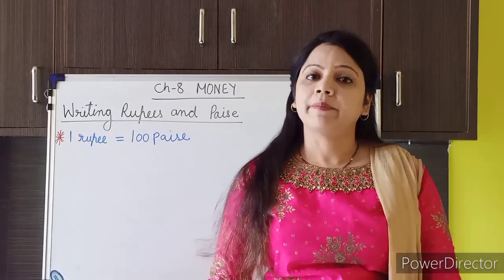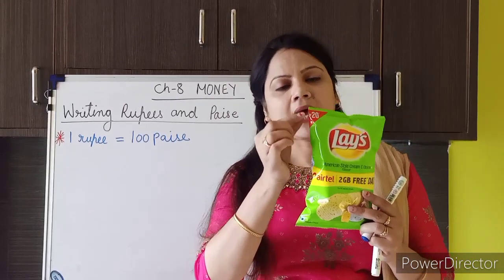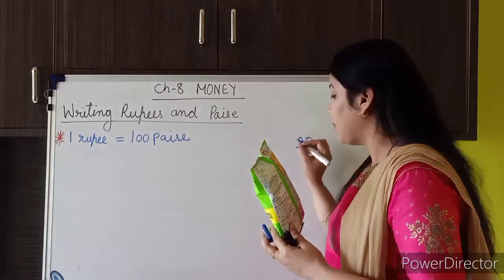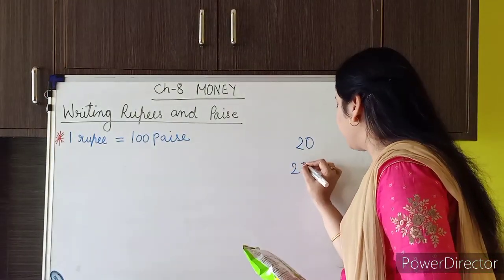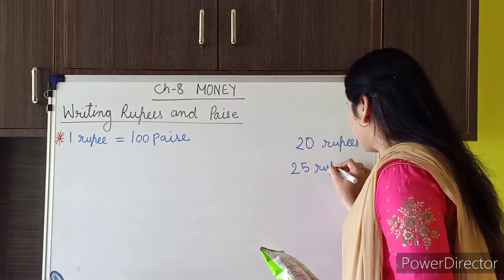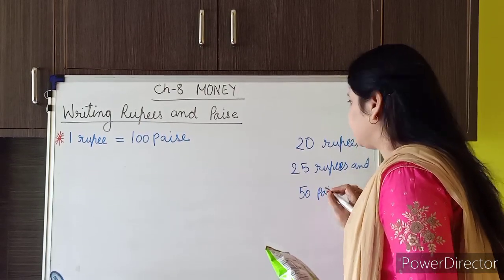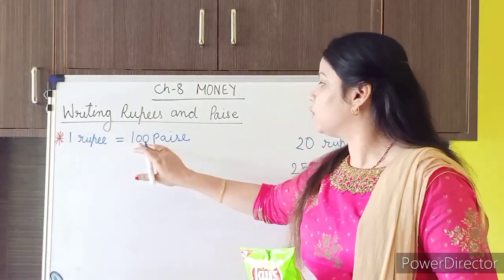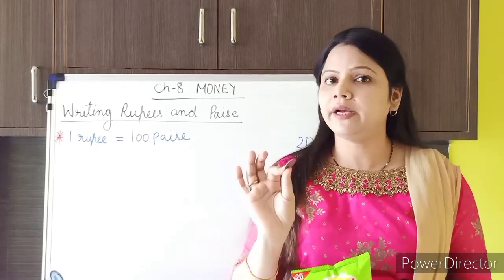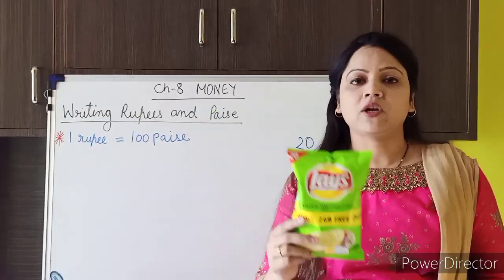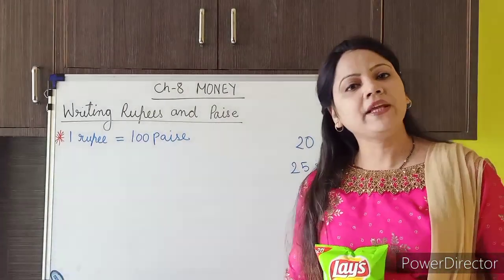We usually express the price of anything in rupees and paise. The cost of this chip is rupees 20, as it is written there. But the cost of this marker is 25 rupees and 50 paise. So we already know that 1 rupee is equal to 100 paise. If we have this 1 rupee coin, that means we have 100 paise. The cost of this chip is 20 rupees whereas the cost of this marker is 25 rupees and 50 paise.